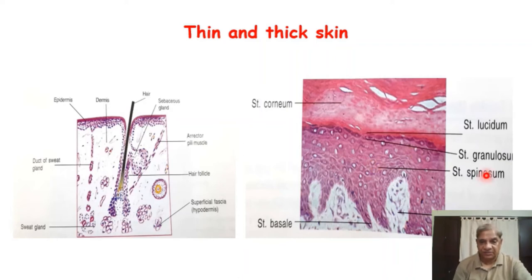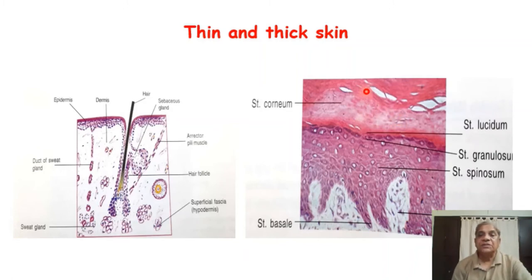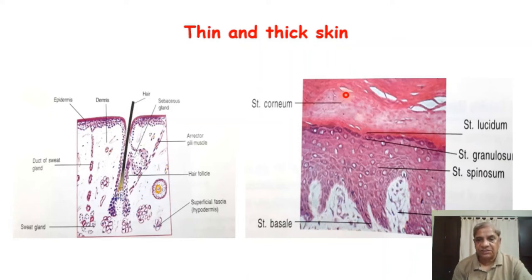Above the stratum basale is the stratum spinosum, then the stratum granulosum where granular structures fill the cytoplasm of cells. A homogeneous layer called stratum lucidum is present only in thick skin. Beyond that is a thick stratum corneum. All these layers are also present in thin skin but are very thin — fewer cell layers and a thinner corneum. This is a basic histological overview; greater detail will be covered in histology.